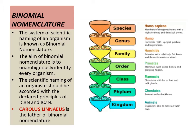The aim of binomial nomenclature is to unambiguously identify every organism. Scientific naming should be in accordance with the declared principles of ICBN and ICZN. ICBN stands for International Code of Botanical Nomenclature and ICZN stands for International Code of Zoological Nomenclature. Carolus Linnaeus is the father of binomial nomenclature.